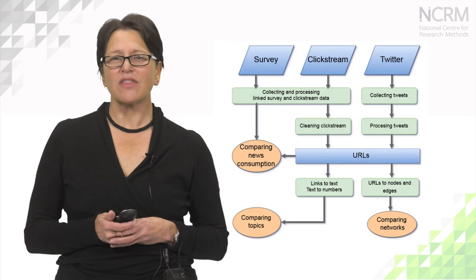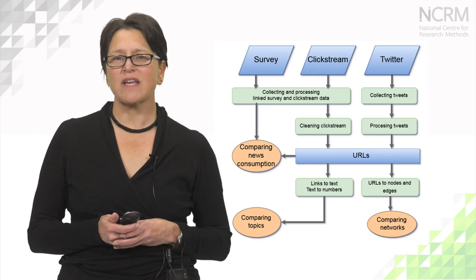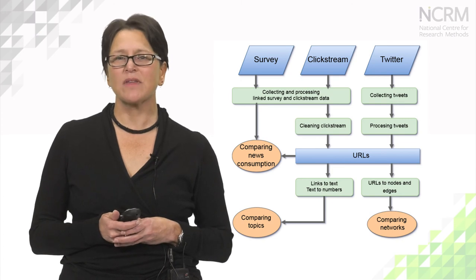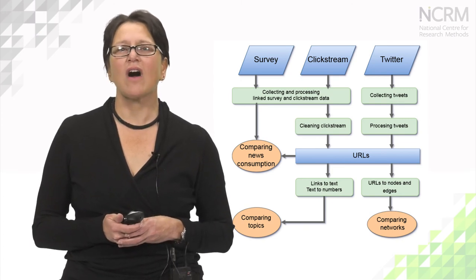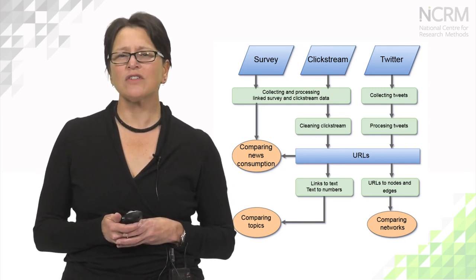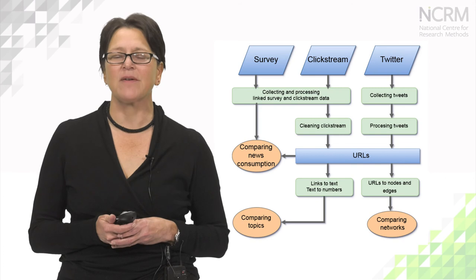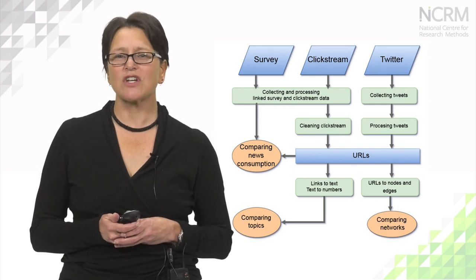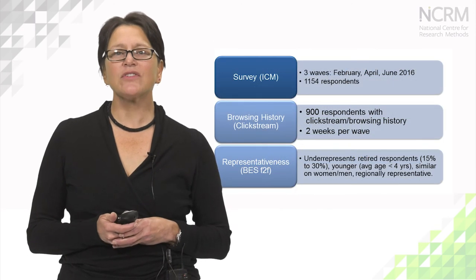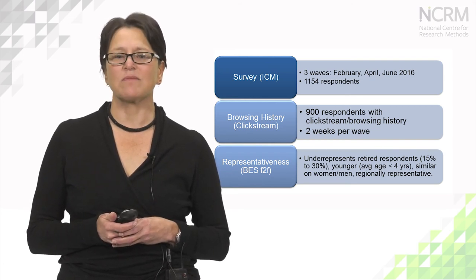This is the flowchart of what we've been looking at today. The blue boxes represent the sources of data: surveys, clickstream data, and Twitter data. The green boxes are how we process the data before we analyze it. And the orange circles represent the outputs of the analysis and the processing. I will start by talking about survey data and web browsing or clickstream data.